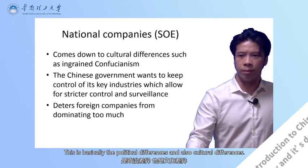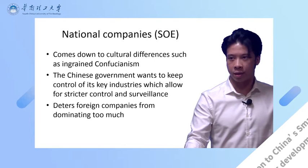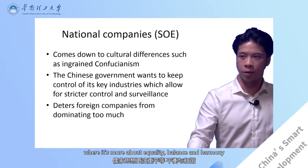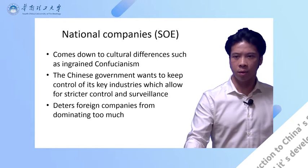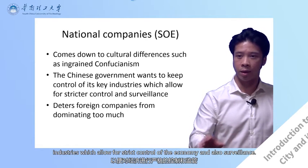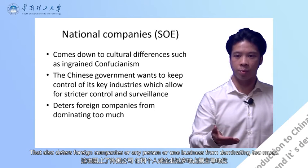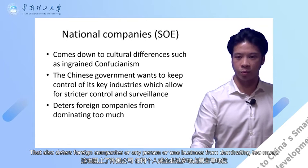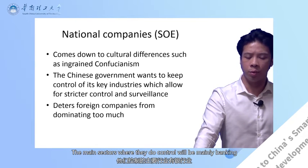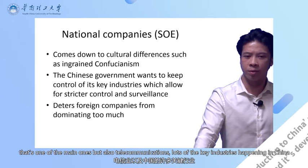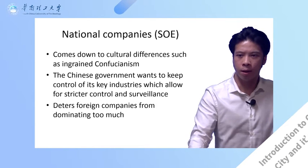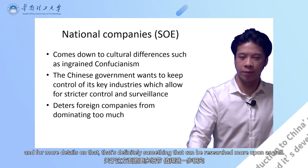Basically, this comes down to political and cultural differences. Communism, in many ways, ties in with Confucianism — where it's more about equality, balance, and harmony. The Chinese government keeps control of key industries, which allows for stricter control of their economy and also deters foreign companies or any one business from dominating too much. The main sectors they control include banking and telecommunications. From the 2019 Fortune list, key national companies in China include logistics, oil, utilities, telecommunications, automotive, and construction — all really key industries needed to develop a country quickly.